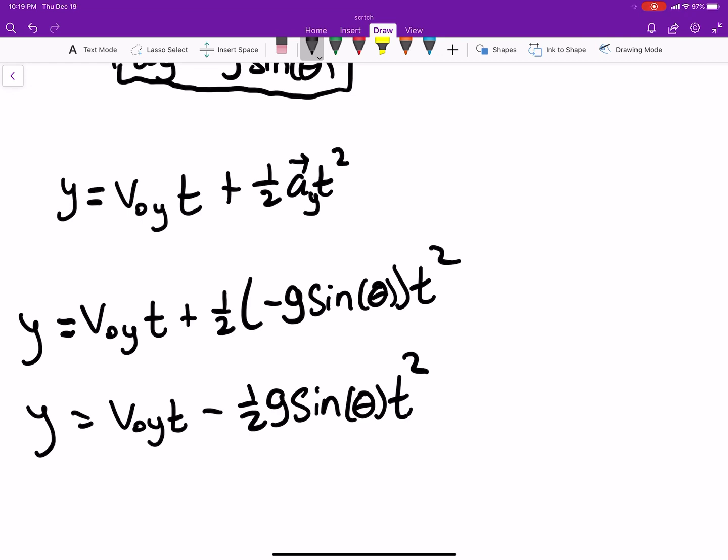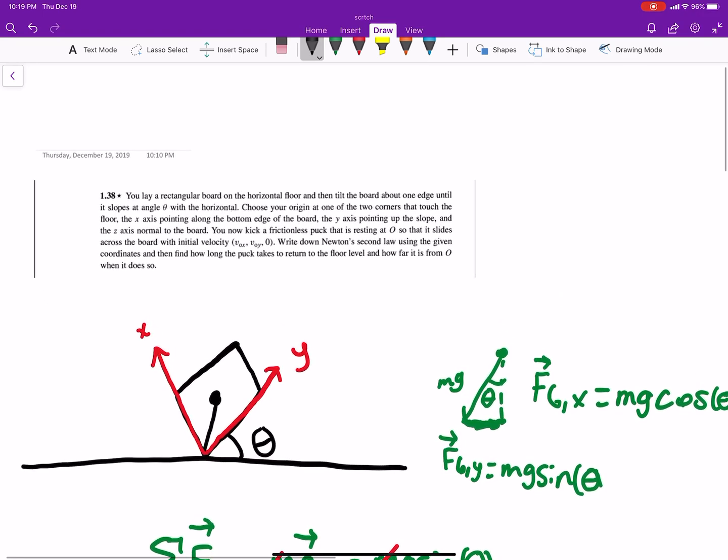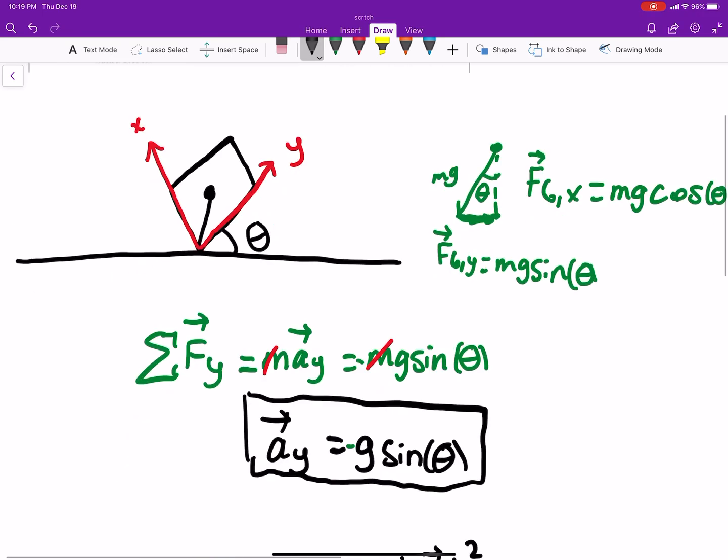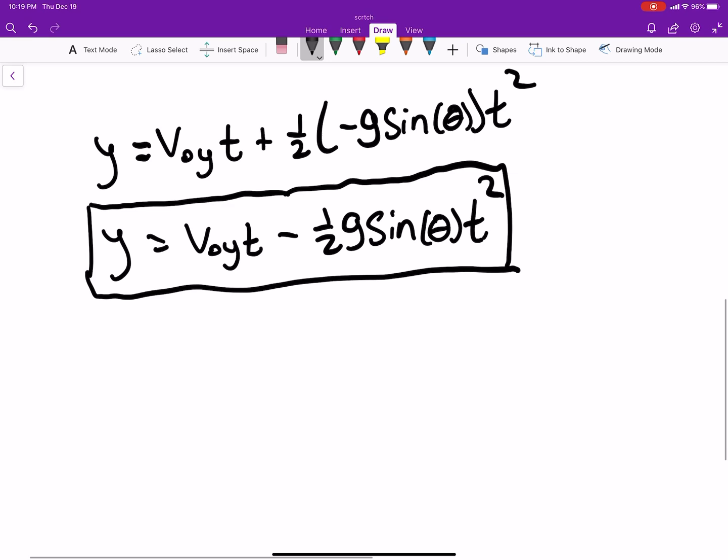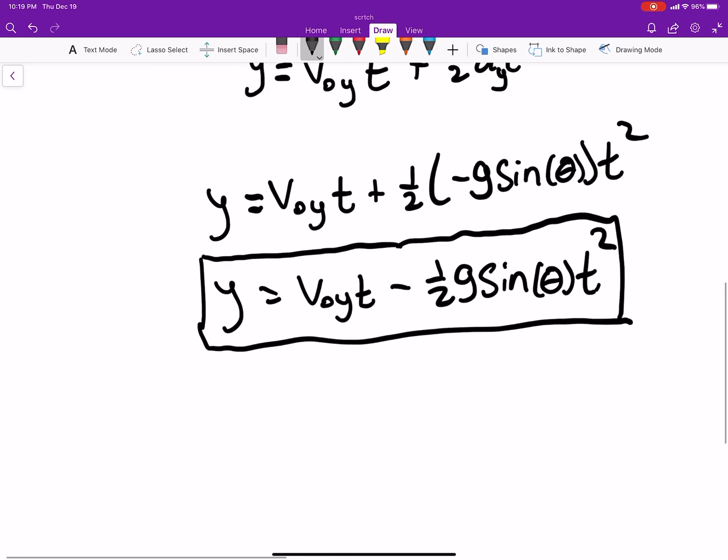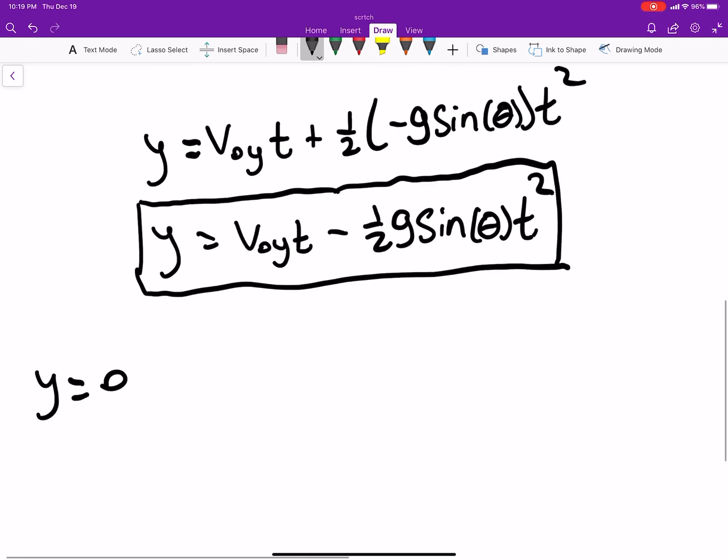Okay, so this describes our y position as a function of time. That's important information. Now we want to know when the puck returns to the floor, or when it returns to the floor level. That will happen when y is equal to zero. That's when it returns back to our floor when it slides back down.